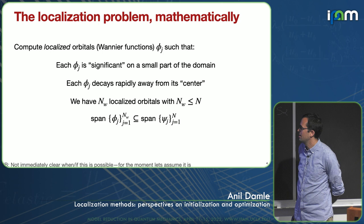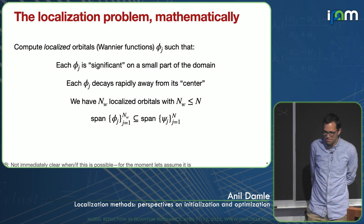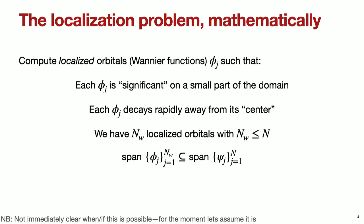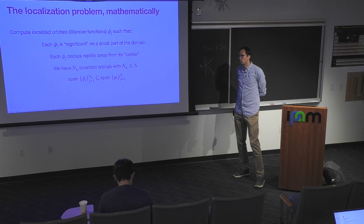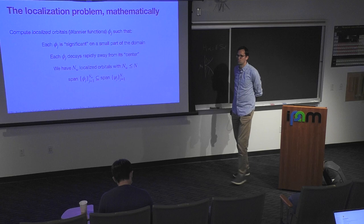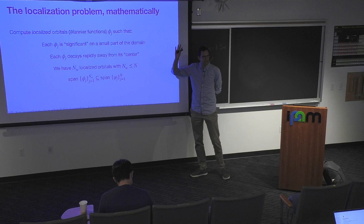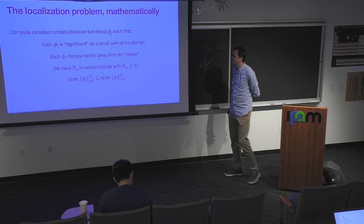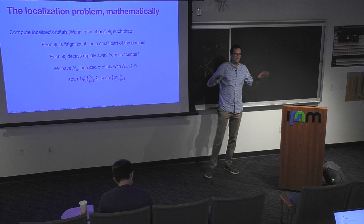We're going to talk about the localization problem, or the computation of Wannier functions. The idea is that I have these N eigenfunctions, and I might want a different basis than the eigenfunctions themselves. In particular, we're looking for a basis of so-called Wannier functions — phi — that have various properties. Each basis function should only be significant on some small part of the domain, with most of its mass in some small region. I'd like each phi to decay rapidly away from its center — think Gaussian-looking functions.